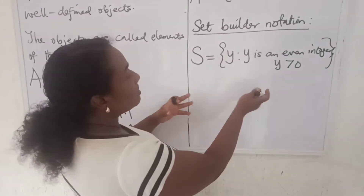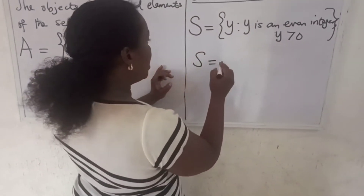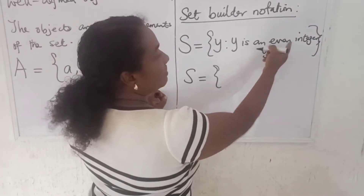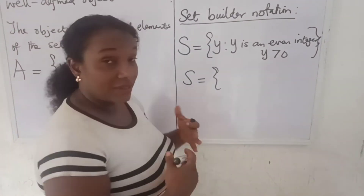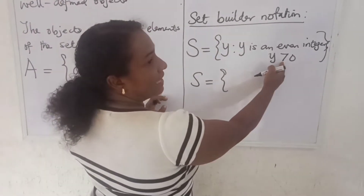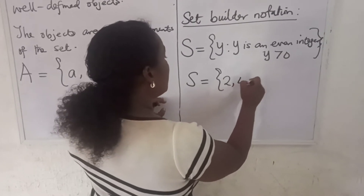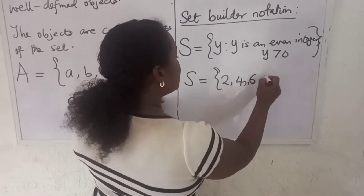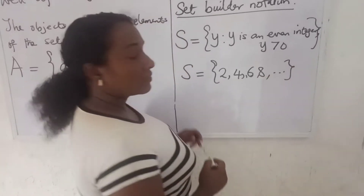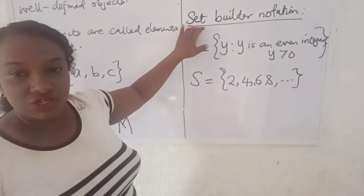So we have written this set not by listing the elements, but by writing the characteristic which describes the elements of the set. We can write out the elements: this set is equal to 2, 4, 6, 8, and so on. That is the set builder notation.